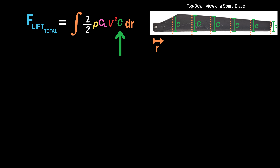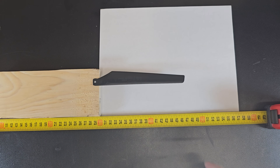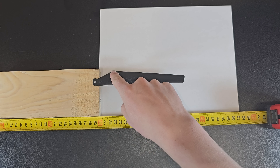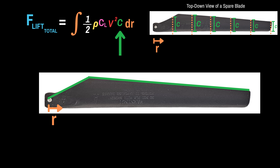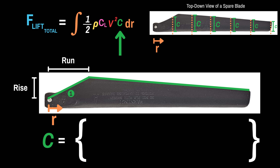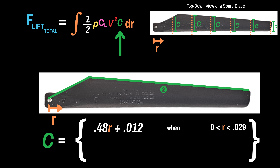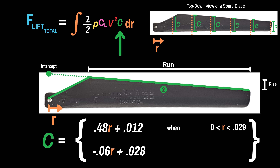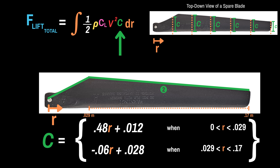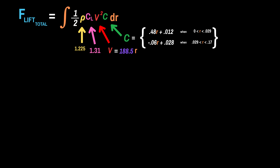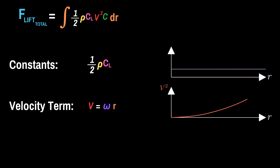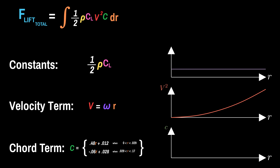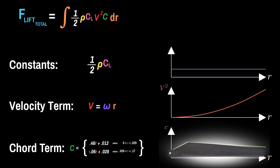Lastly, the chord, which is also not constant along the blade. Looking from above, there are two distinct sections. In the first, the chord length increases in a roughly linear way; then it reaches its largest chord length. In the second section, it decreases in a roughly linear way. As a result, I can estimate the chord as a function of radius using a piecewise function with two lines. For the first section, I measured the rise over run to get the slope and the y-intercept, approximating chord from radius 0 to about 0.029 meters. For the second line, I did the same, covering 0.029 meters to the tip at 0.17 meters. Plotting all terms together, the chord piecewise function overlaid on the actual blade image looks like a pretty good approximation.